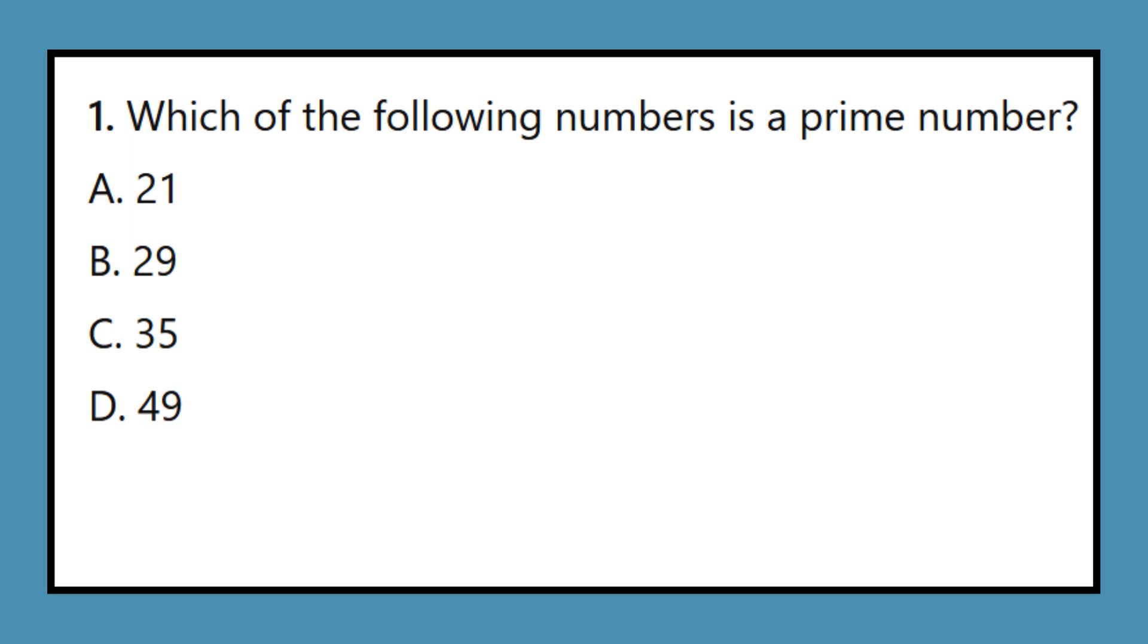Question 1: Which of the following numbers is a prime number? A. 21, B. 29, C. 35, D. 49.